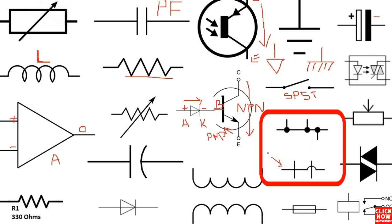Here we have wire connections. This first symbol, where we have a black dot, means there is a connection between all these wires. The dot means connection.